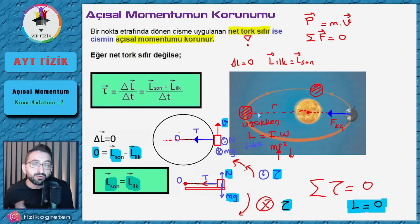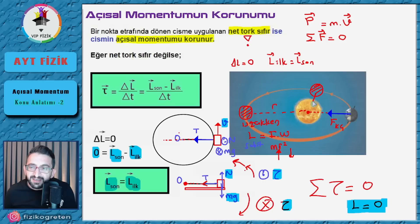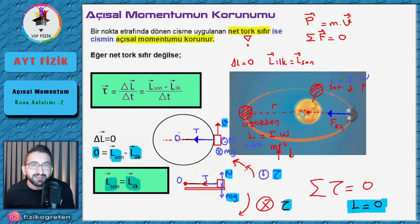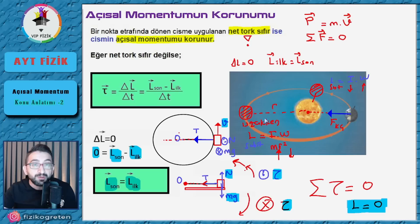Eylemsizlik momenti büyük olur çünkü uzakta olunca M×R² büyük çıkıyor, ama açsal momentum değişmez — yakınken de aynıdır, uzakken de aynıdır. Yakınken ise L = I × ω'da I küçük olduğundan, L'nin sabit kalması için açsal hız artarak yanıt veriyor. Yani güneşe yakınken Dünyanın çizgisel hızı ve açsal hızı artar; güneşe uzakken ikisi de azalır.